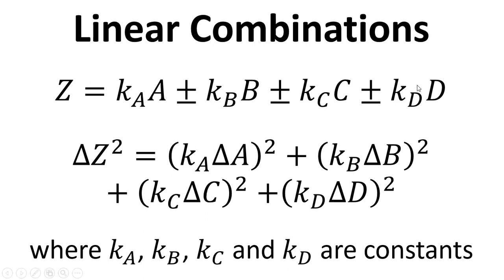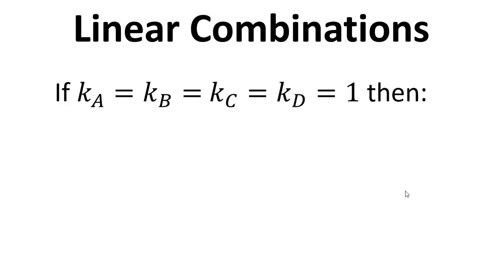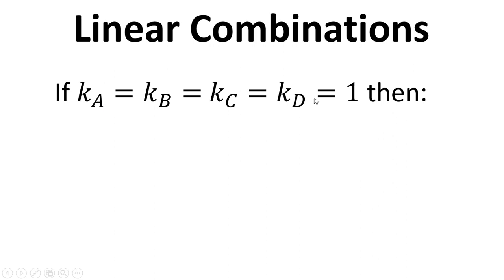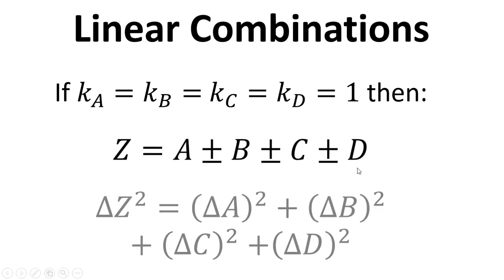And for any extra terms that we add on, we just add on the extra error terms. Now if we have the situation where all these multipliers are just equal to 1, then this simplifies down to this. And the error equation, the propagation of uncertainty, just simplifies down to this.